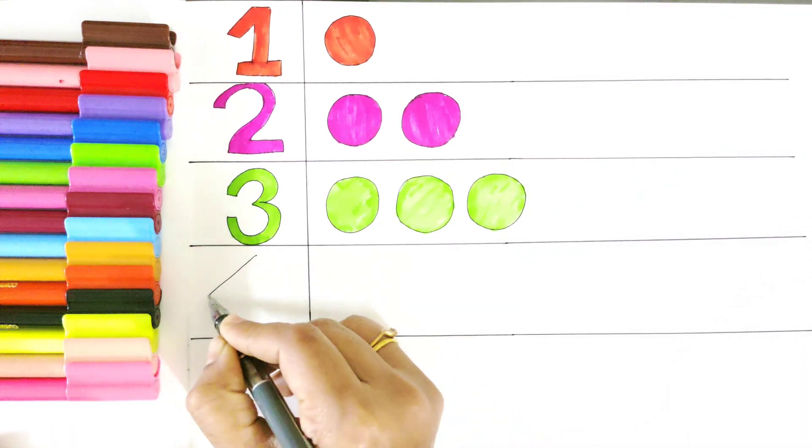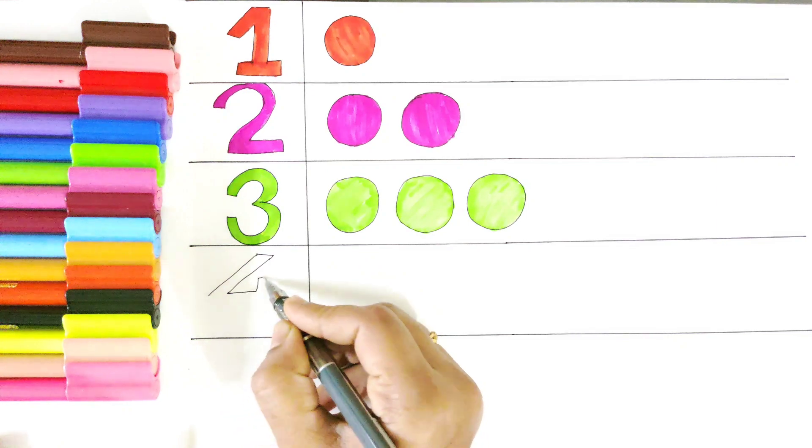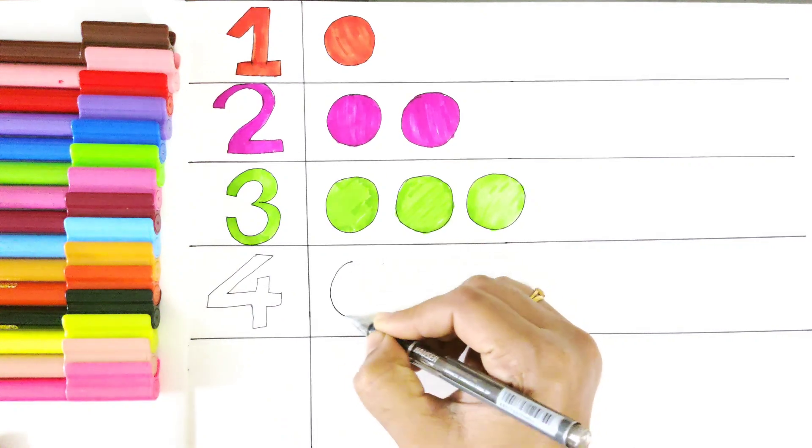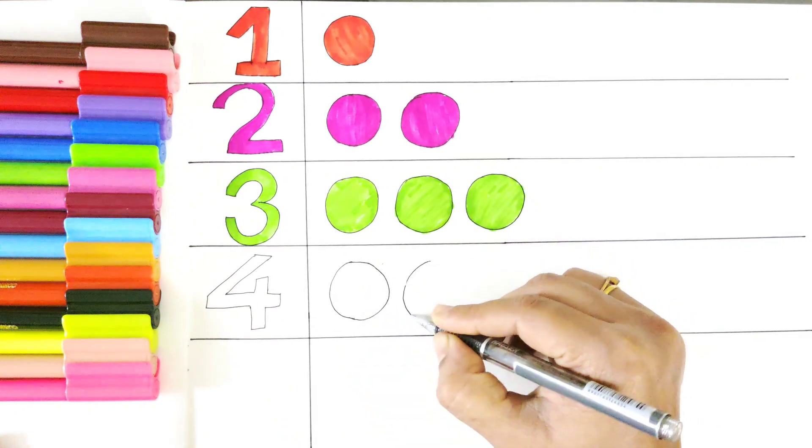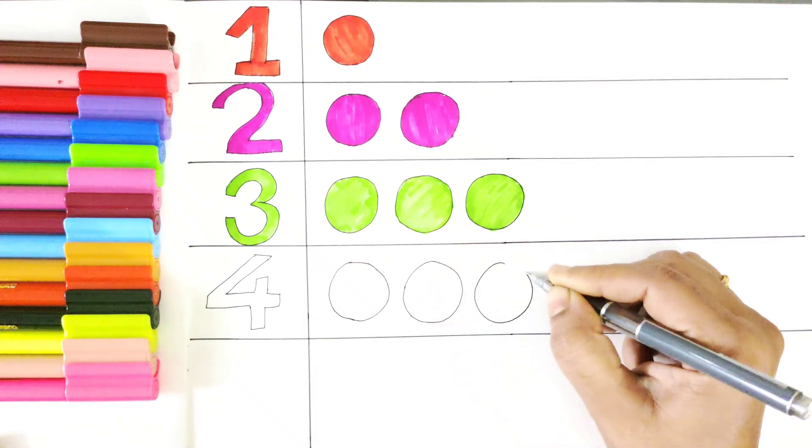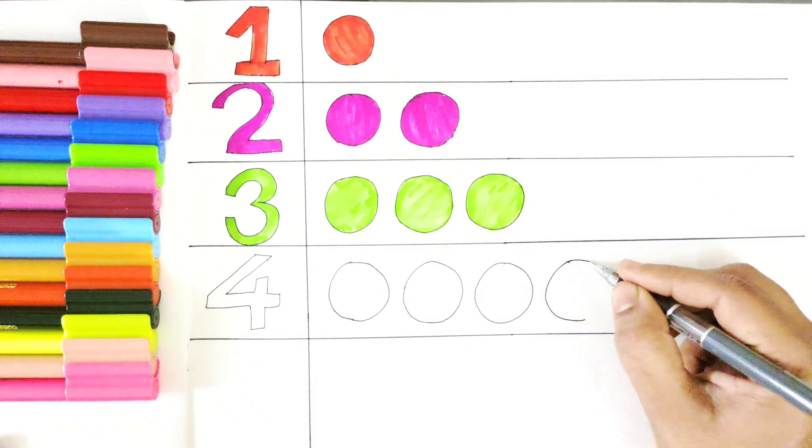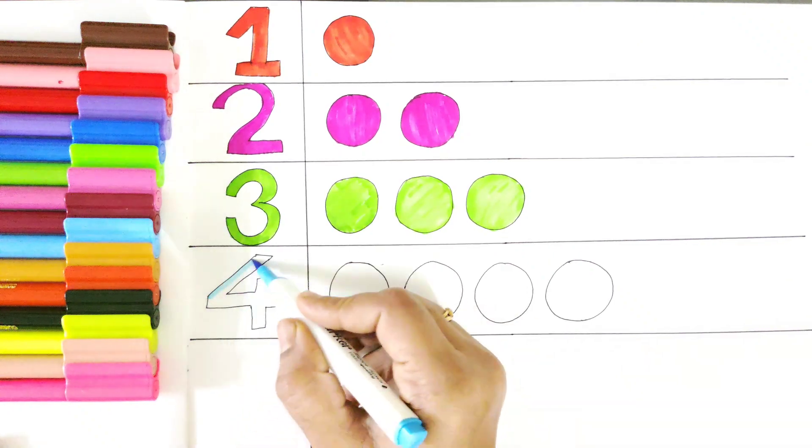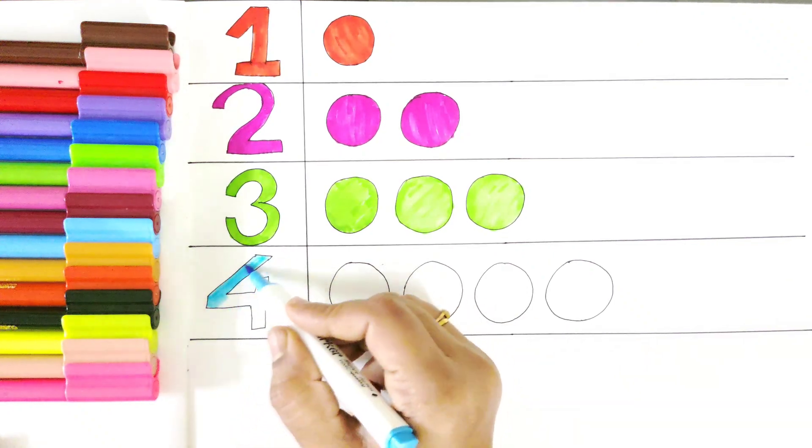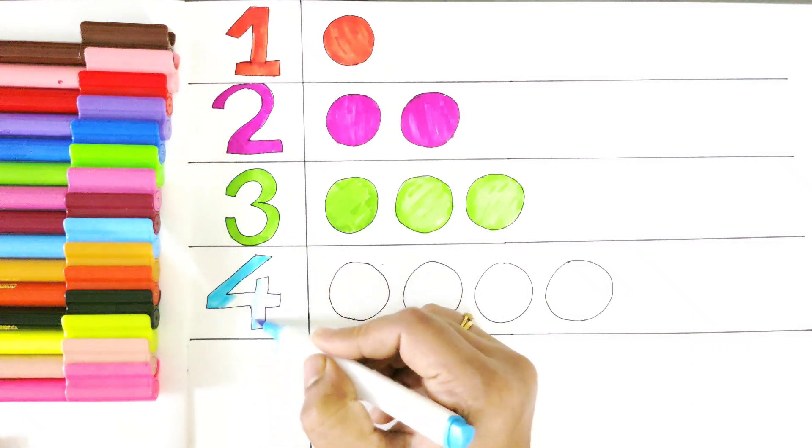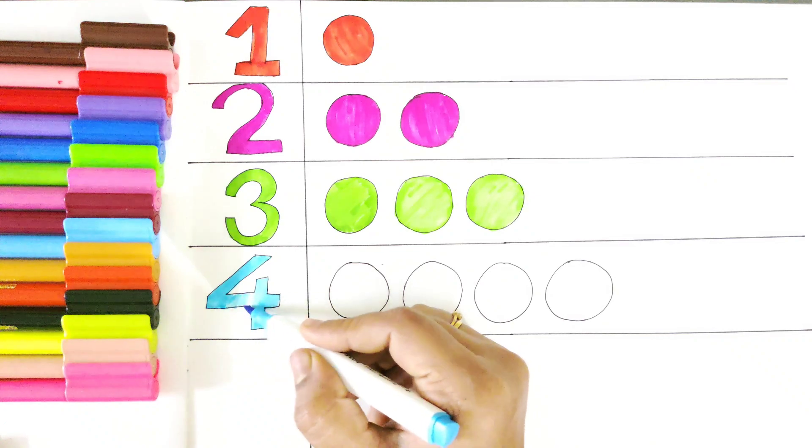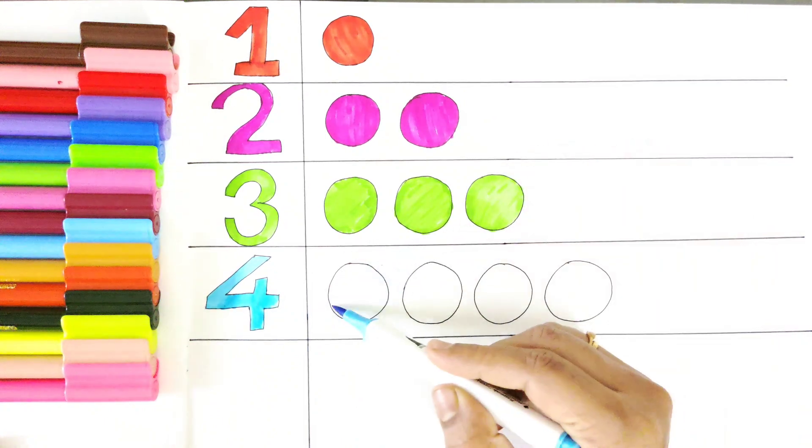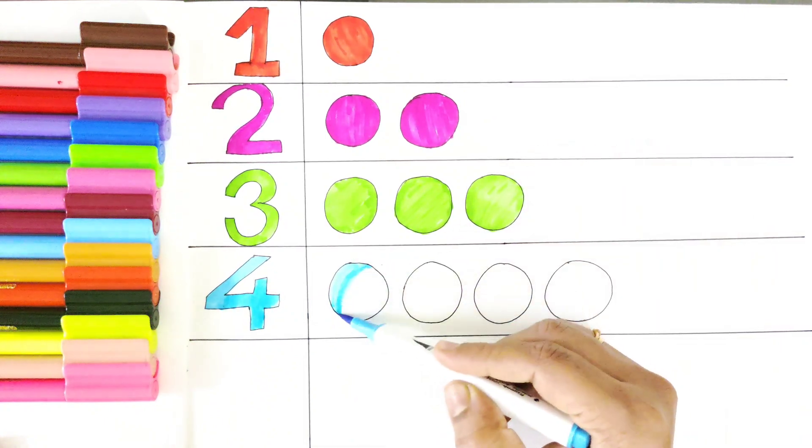Let's draw number four. Now, we will draw four balls. One, two, three, four. I am using blue color in the number four. Now, let's fill the same blue color in all four balls.